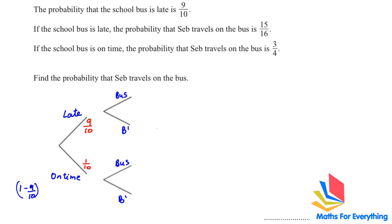Then the next information we have is, if the school bus is late, the probability that Seb travels on the bus is 15 over 16. So, if it is late, he travels on the bus is 15 over 16. Then what will be, that he does not travel on the bus. Again, we are going to have 1 minus 15 over 16. That will give you 1 over 16.